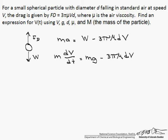So now let's rearrange so velocity is on the same side as its derivative and t is by itself. So dv over g minus 3 pi mu dv over m equals dt.